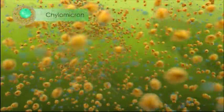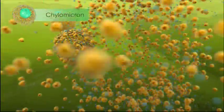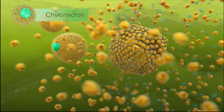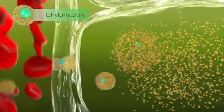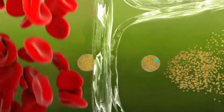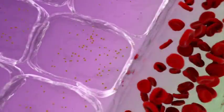Once inside the cell, the micelle contents are repackaged into spherical particles called chylomicrons. The chylomicrons then carry their fatty contents into the bloodstream, where they are delivered to their target tissues, including the liver.